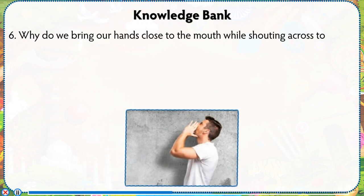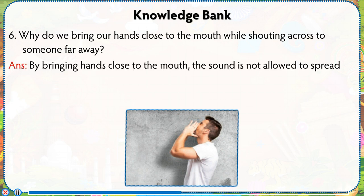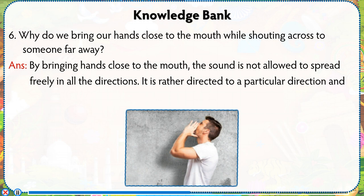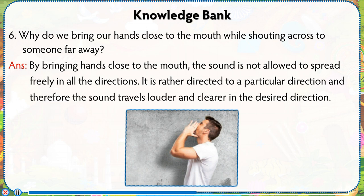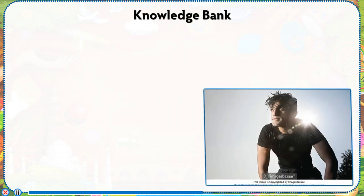Number 6: Why do we bring our hands close to the mouth while shouting across to someone far away? Answer: By bringing hands close to the mouth, the sound is not allowed to spread freely in all directions. It is rather directed to a particular direction, and therefore the sound travels louder and clearer in the desired direction.